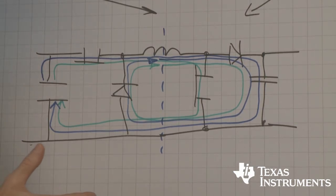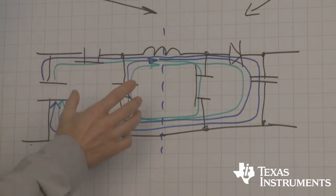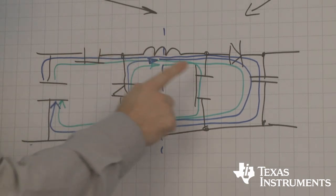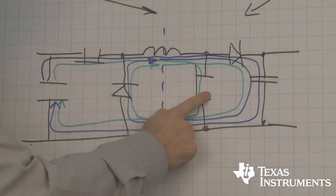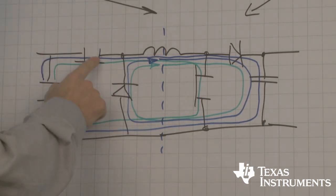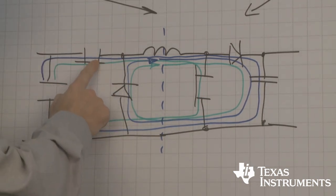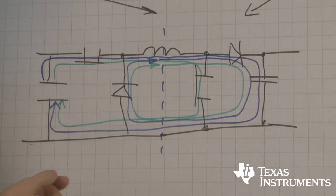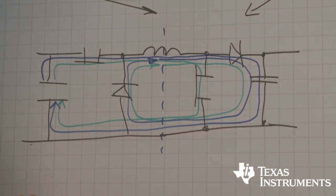So the summary is, in buck mode, high side FET is switching, low side FET is off. And in boost mode, high side FET is on and low side FET is switching. These are the two states inside the buck boost power stage.